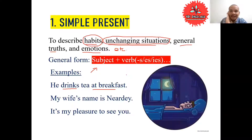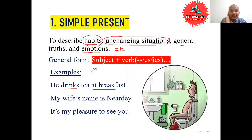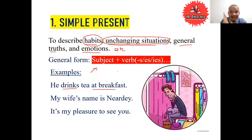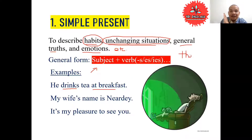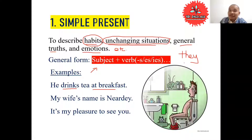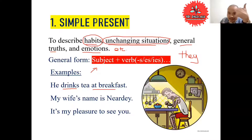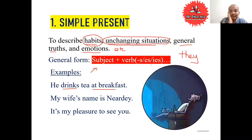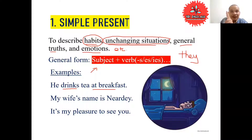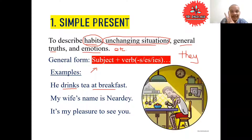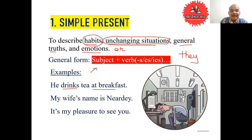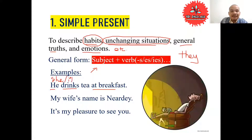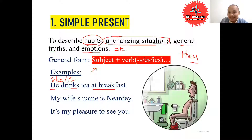But when we use a third person singular subject — we're talking about a singular subject, third person, not third person plural — the rule is different. Third person plural is 'they,' and with plural subjects we use the base verb form. For third person singular, remember there are three subjects: he, she, and it. Those three are the third person singular subjects.